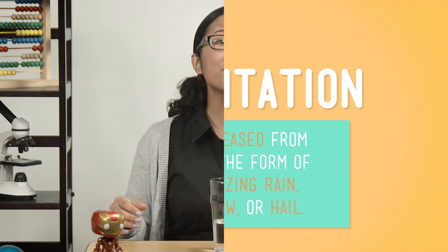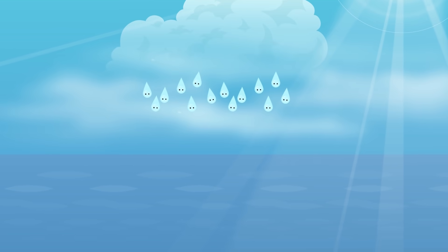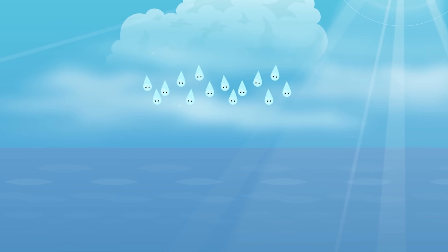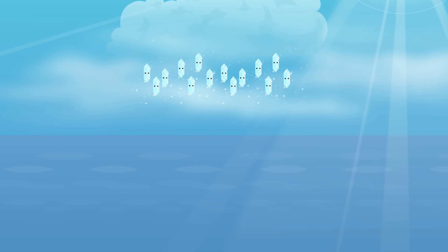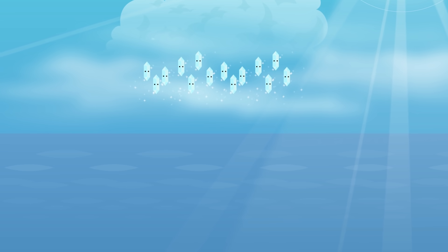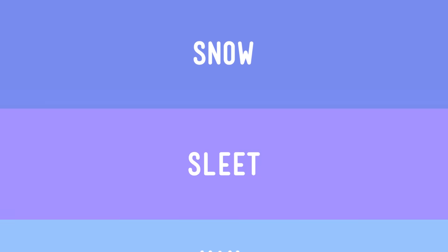It takes millions of cloud droplets to produce just one raindrop. If the clouds are cold enough, they can form other kinds of precipitation too. Ice crystals can form in the clouds, growing bigger and heavier, until they fall in the form of snow, sleet, or hail.